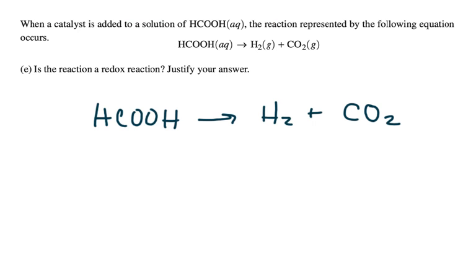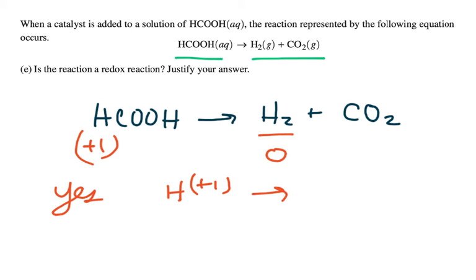Okay, the next part here, part E. When a catalyst is added to a solution of methanoic acid, the reaction represented by the following equation occurs. So, now we're still talking about methanoic acid, but we're talking about a totally different situation. So, here we have the methanoic acid turns into H2 and CO2. Is the reaction a redox reaction? Justify your answer. So is it a redox reaction? The way to tell here is to look at the oxidation numbers. And if you've done oxidation numbers, you know that for any element in its natural state, the oxidation number is zero. So, hydrogen is zero. Now, in its compounds, hydrogen is almost always plus one. So, I can say, yes, this is redox, because hydrogen that was plus one has changed to hydrogen that is zero.